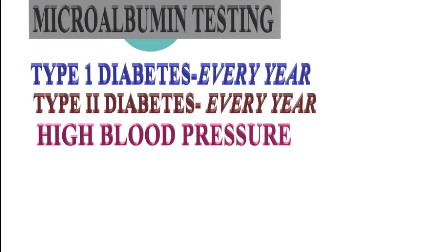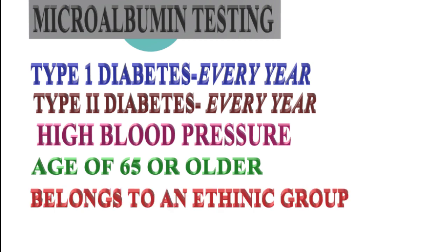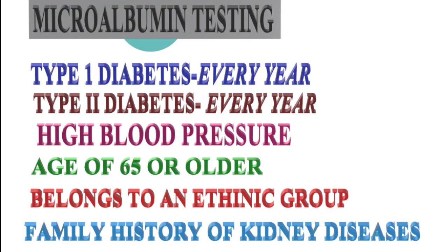High blood pressure: the doctor will decide how often to test according to the condition of the patient. Also tested: age 65 or older with risk factors for kidney or heart disease, and people belonging to ethnic groups more likely to get kidney diseases, including African-American, Asian, Hispanic, and American Indian, as well as those with a family history of kidney diseases.